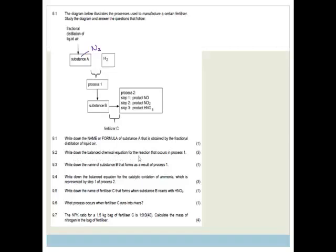Then it says, write down the balanced chemical equation of the reaction that occurs in process 1. So process 1 is actually the Haber process, and this is when we take nitrogen plus hydrogen, and we form ammonia. We form ammonia. And now we need to balance it. So we're going to multiply this by 2, and that by 3, and there you go, it's balanced.